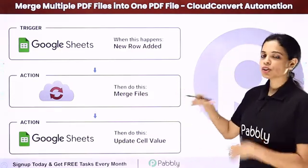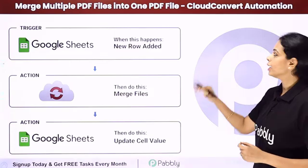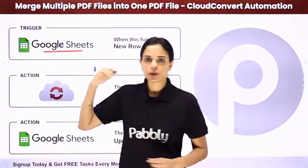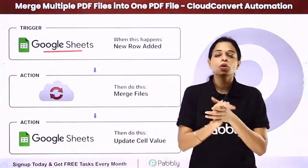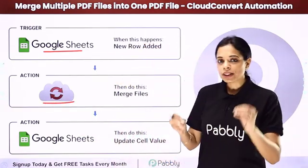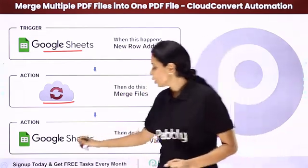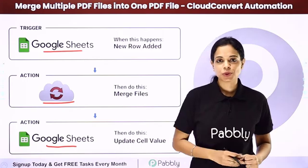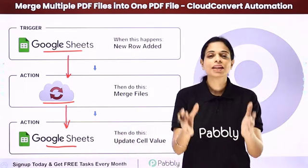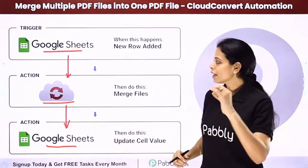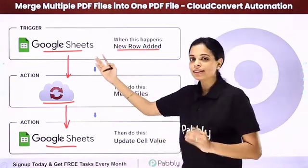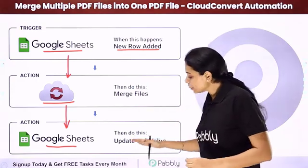In this video, we are going to see how to merge multiple PDF files into one PDF file using Cloud Convert. Let's say that you have got certain URLs in your Google Sheet or any other spreadsheet. You want to merge all those files using Cloud Convert, which is an online file conversion platform. You can do the same and then update the same Google Sheet with the merged file URL. Every time a new row is added with some URLs, it is going to automatically merge all those files and then update the cell value.